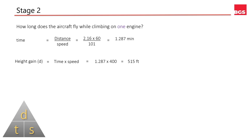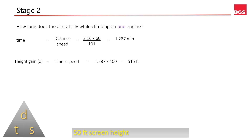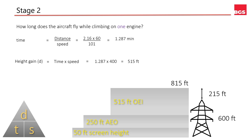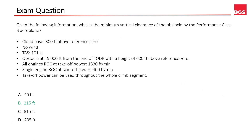We're nearly finished. We add up all the height gained since departing from the 50-foot screen height: 250 feet to the cloud, then 515 feet after the engine failure. This gives us a total of 815 feet, and the obstacle is 600 feet. So our clearance is 215 feet. The answer is B — 215 feet.